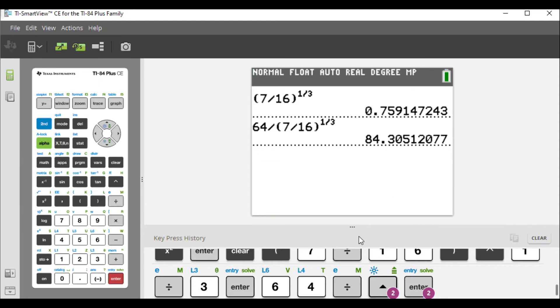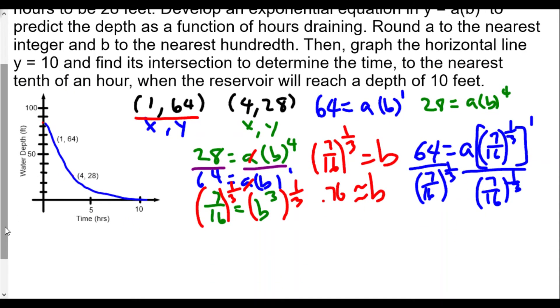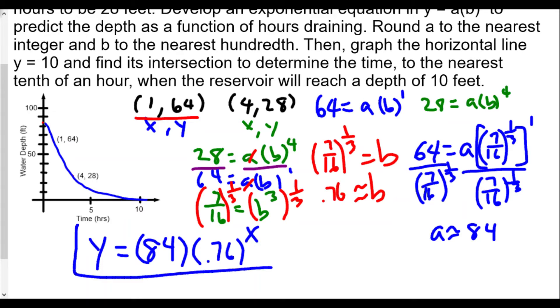Since we have a approximately 84 and our b value is approximately 0.76, the function we're going to use to measure the height of the water is y = 84 times 0.76 to the x power. This is the function we're going to be using here.